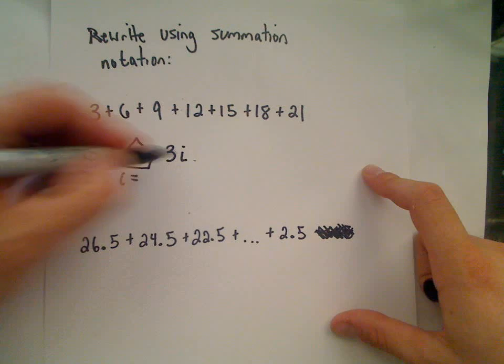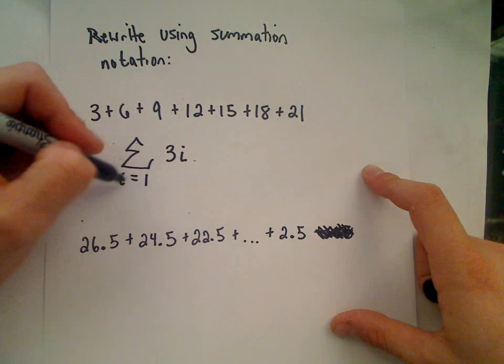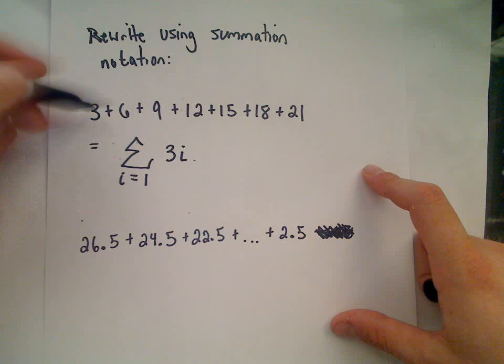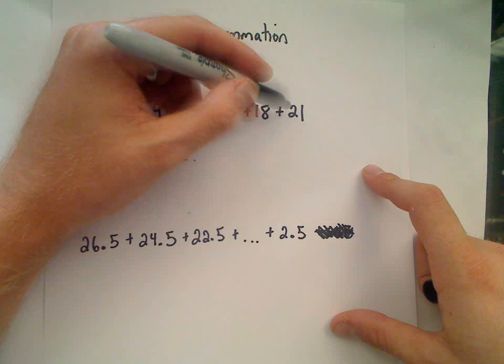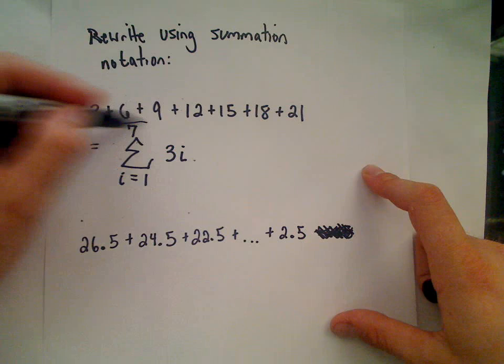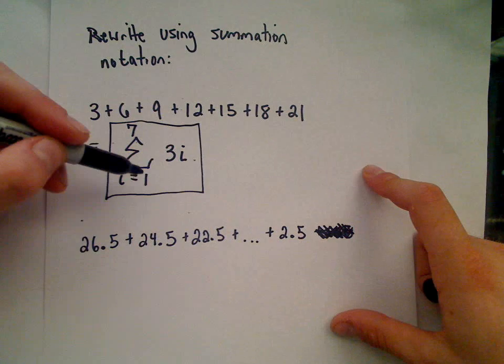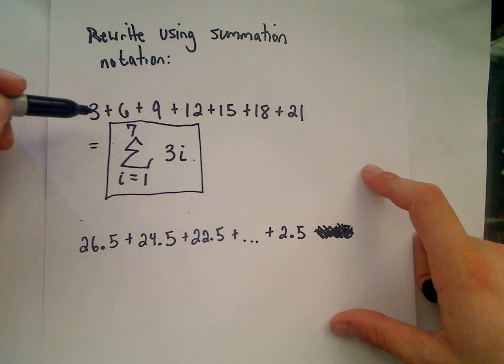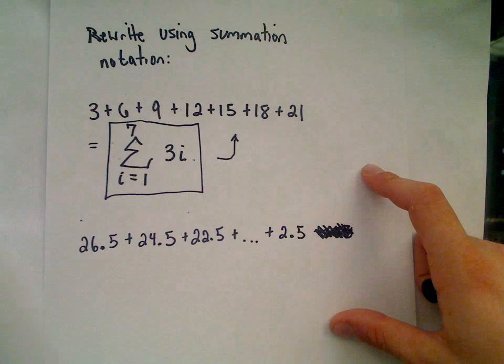To start this in the right place, I would need to start this at i equals 1. If you plug in 1, you'll get 3 times 1, which will give me my first term, 3. The last number I would have to stop at would be 3 times 7 or 21, so my index should stop at 7. And you can go backwards just like we did a second ago, plug all this in, and see that you do in fact get all of this stuff right back.